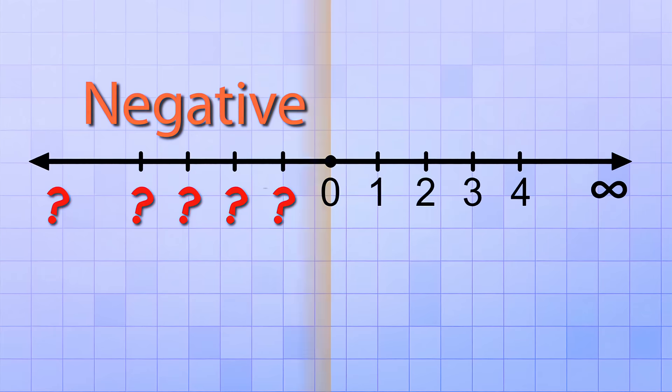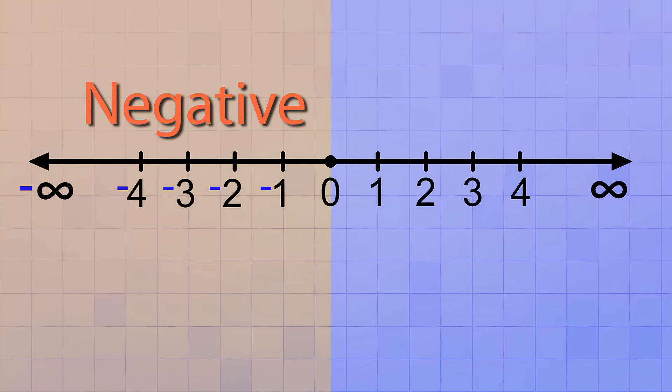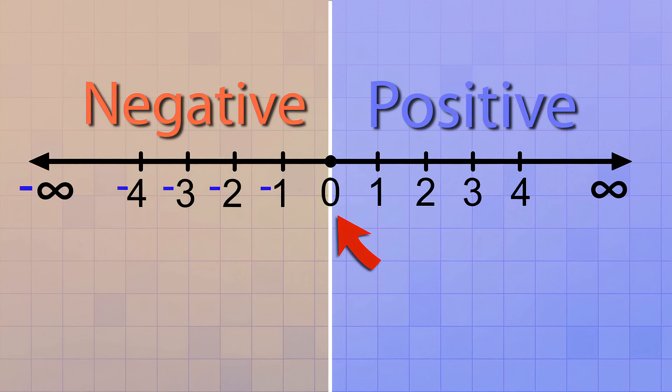The negative numbers are just like a mirror image of the numbers on the right side of the number line, that we call the positive numbers. And zero is the special number that separates the positive numbers from the negative numbers.